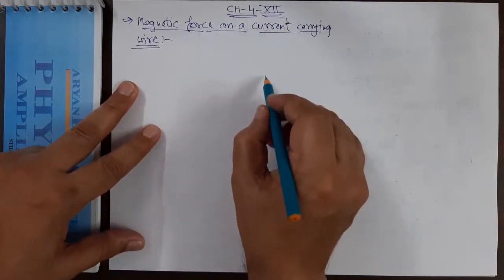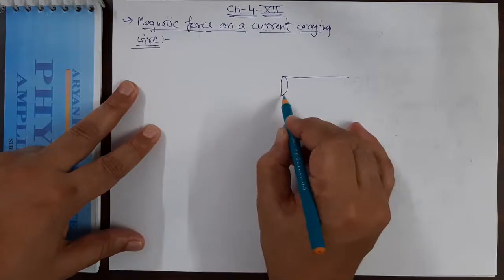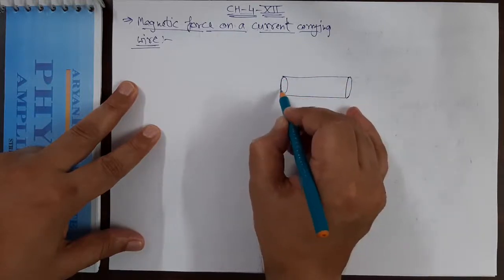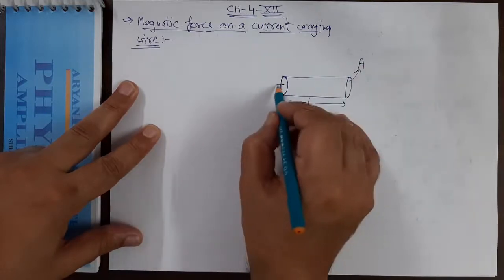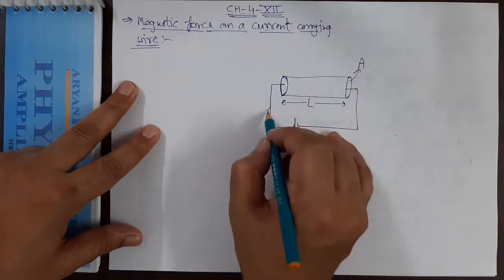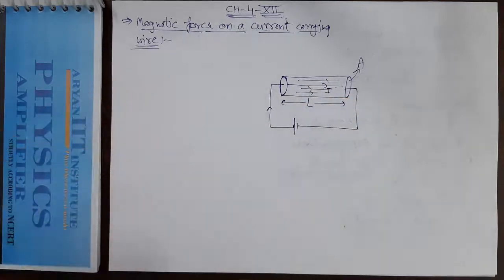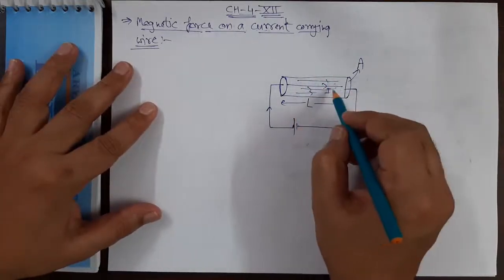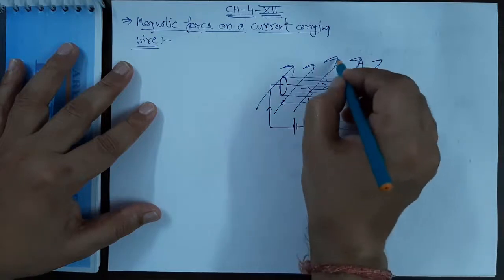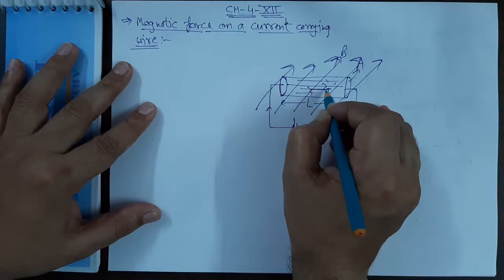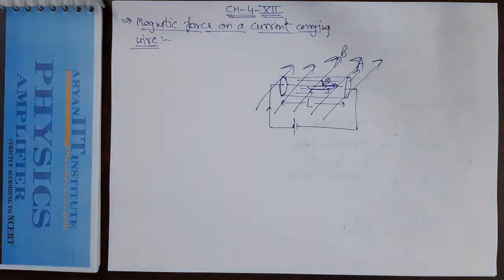Let there be a current carrying cylindrical wire of length L and area of cross-section A, connected to a battery so that it carries a current I. This wire is placed in a uniform magnetic field such that the angle between the current and the magnetic field is theta.